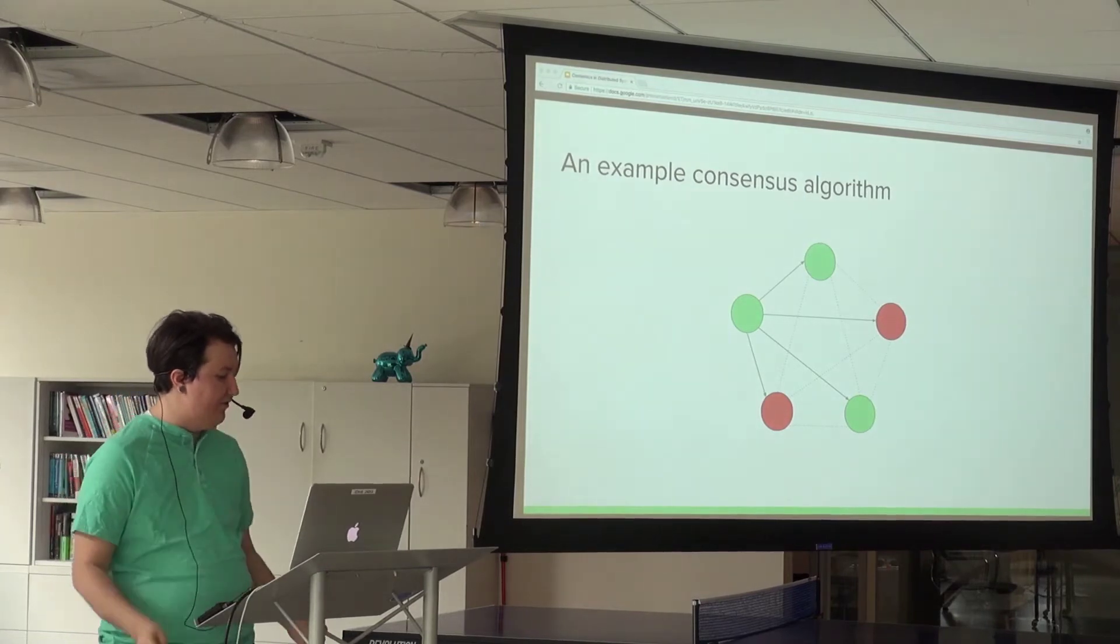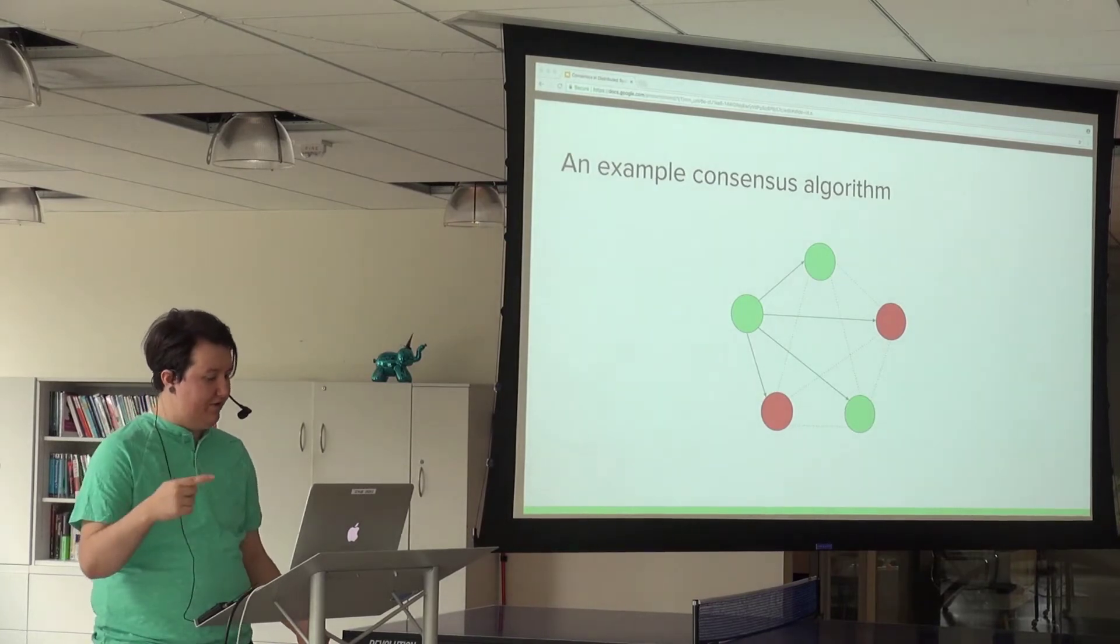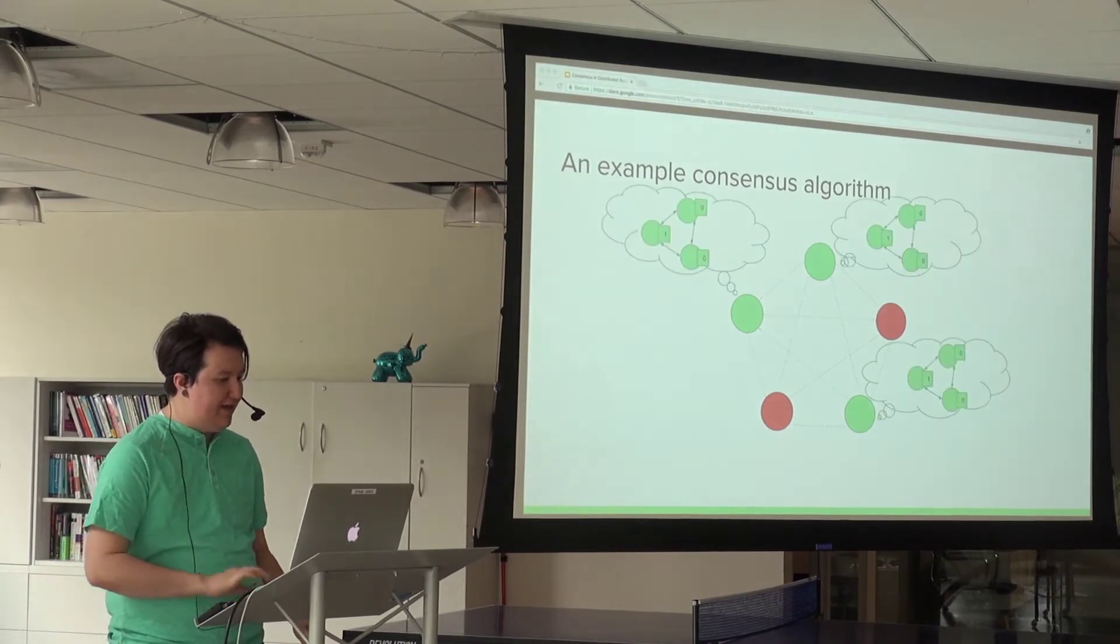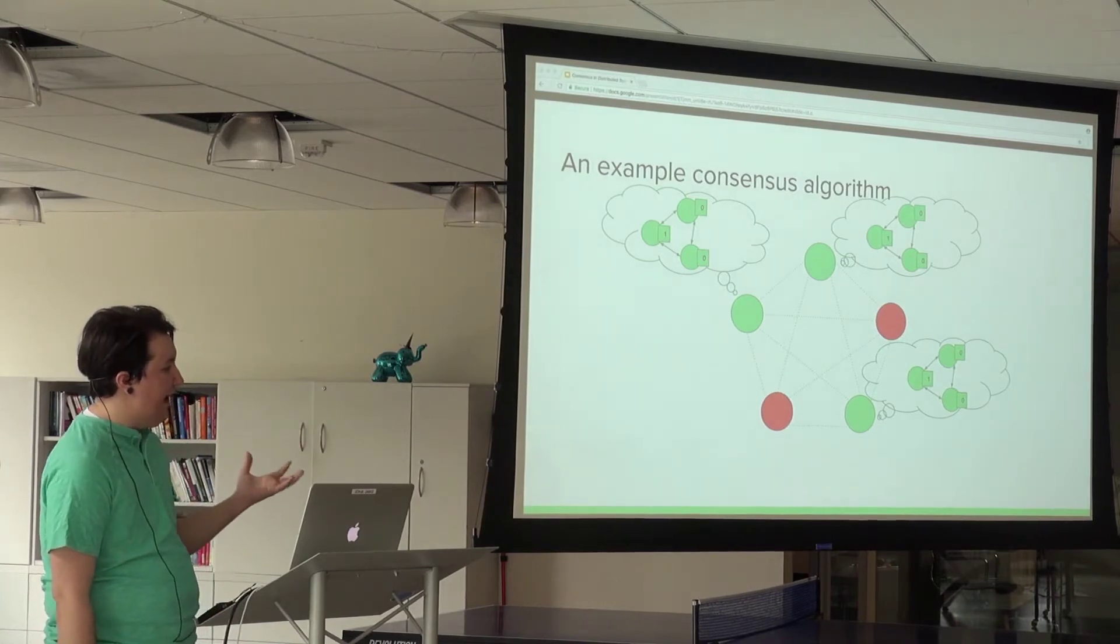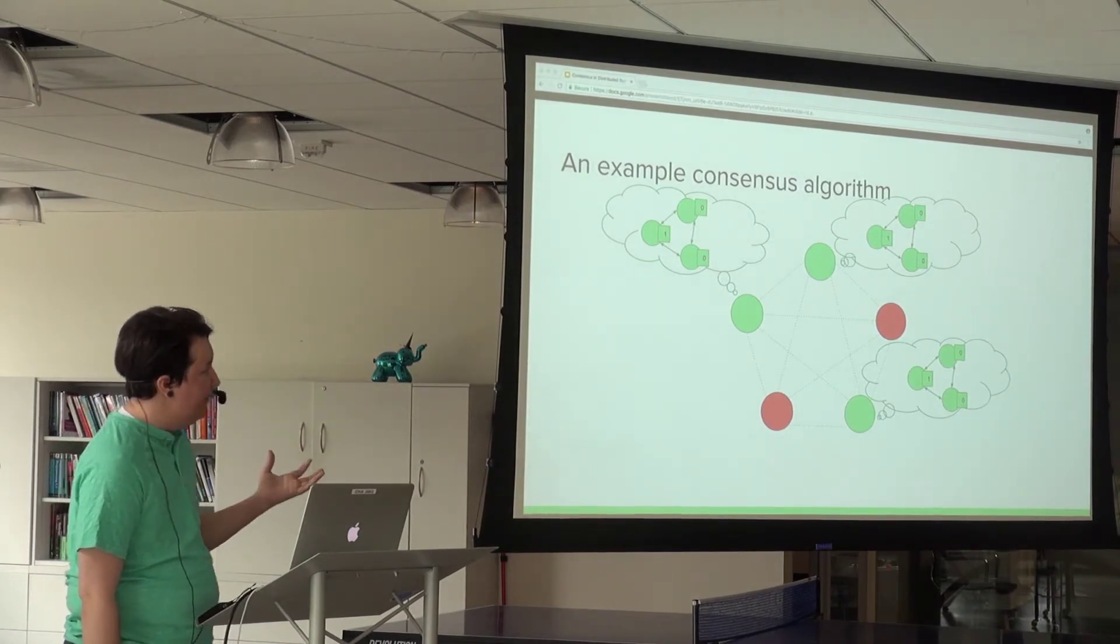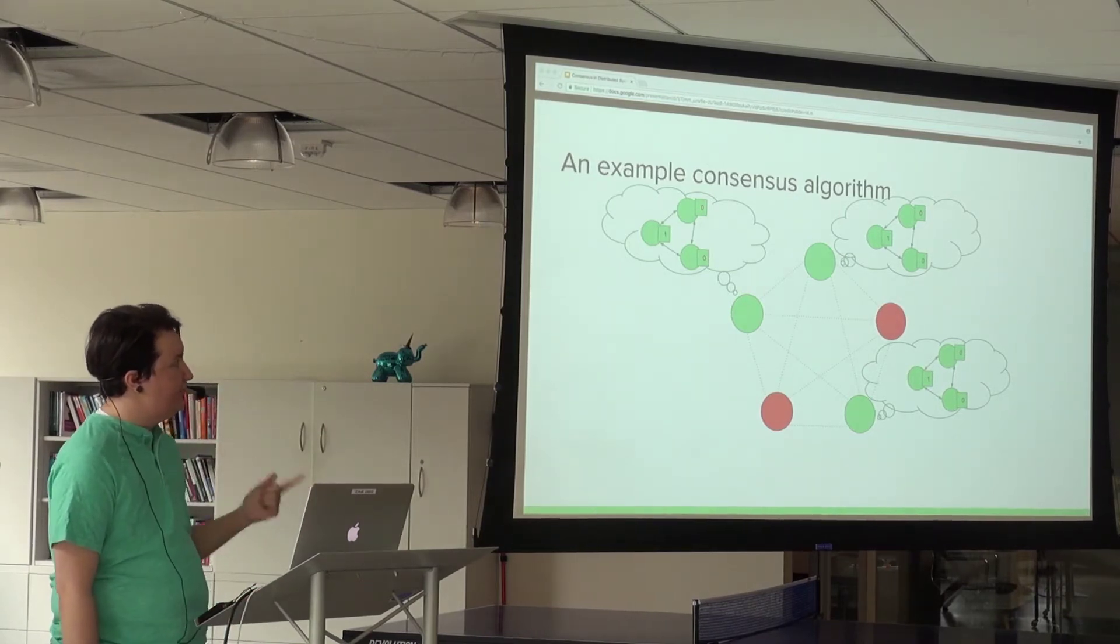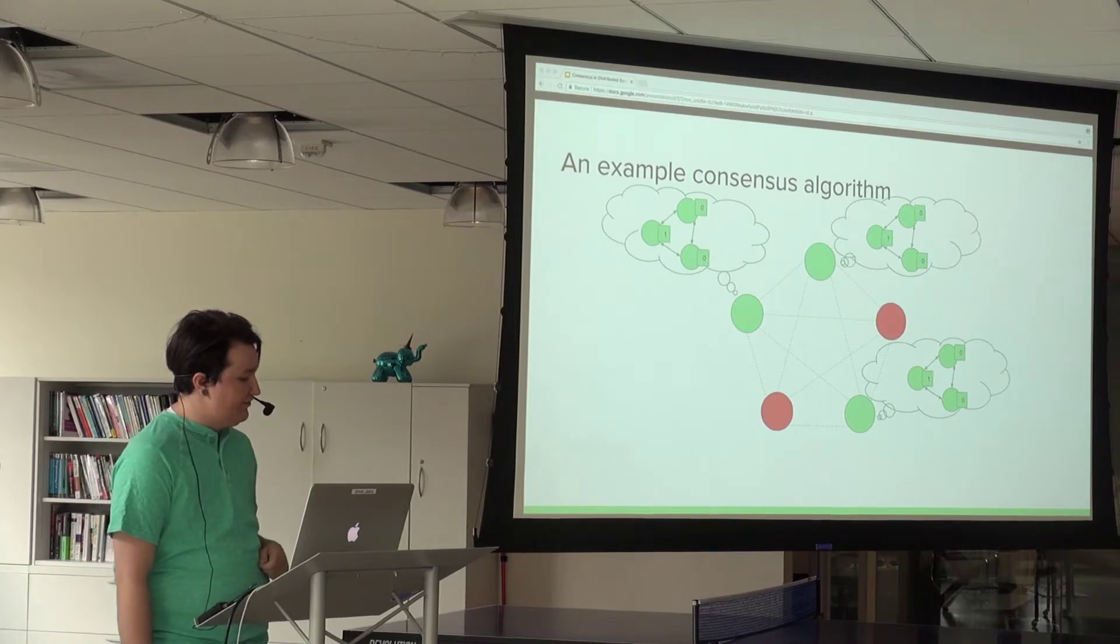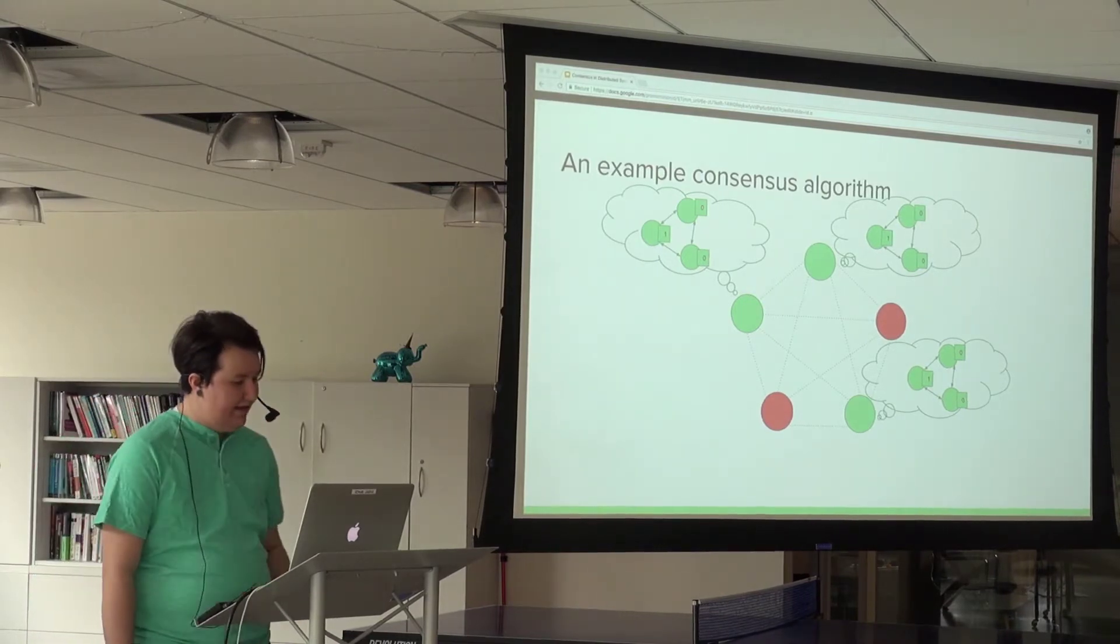On the second round, they broadcast what their idea of the other live nodes is. Each of them comes up with an idea of what the graph of live nodes currently looks like. Nodes one, two, and four all agree that we have live node one with initial value one, node two with zero, and node four with zero.